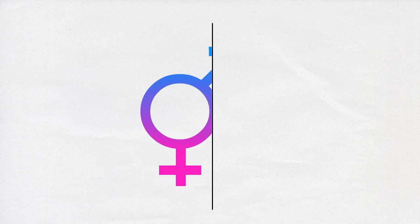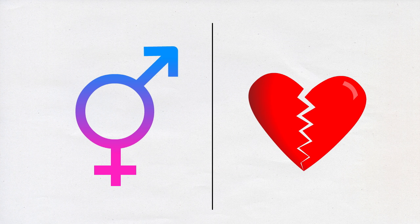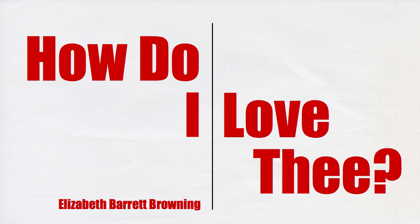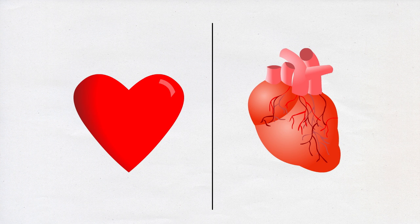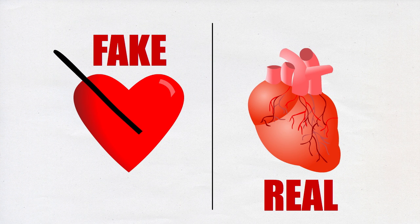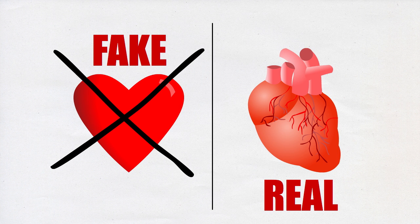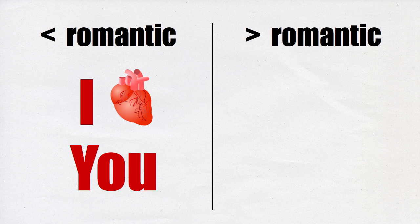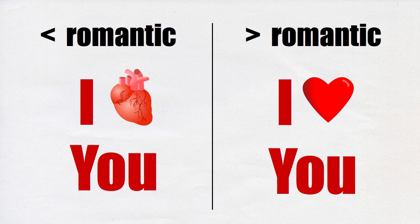Love — the four-letter word with the power to both create and ruin lives, the power to inspire the finest poetry mankind has ever written, and the power to make us forget that hearts don't actually look like that. Expressions of love would be a lot less romantic if Valentine's Day cards said 'I heart you' instead of the version we all know and love. But where did the symbol come from, and why does this equal love?